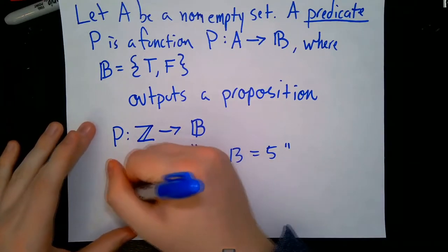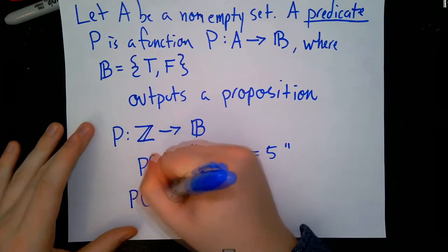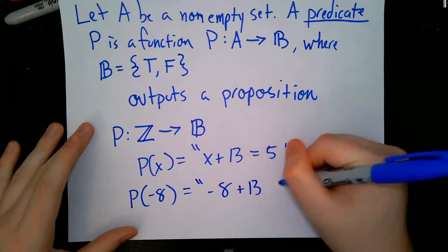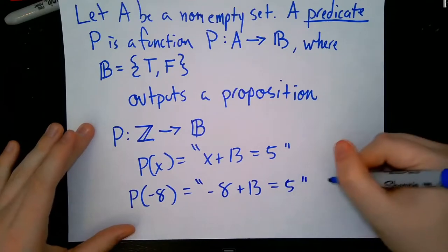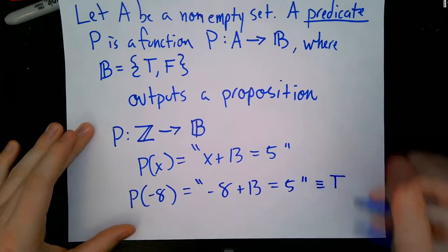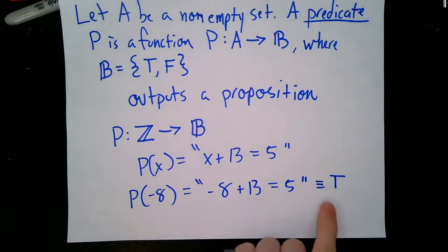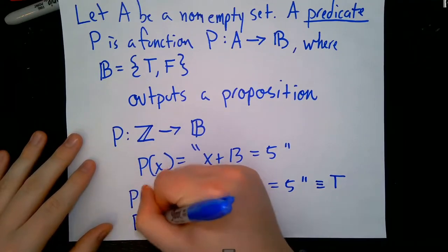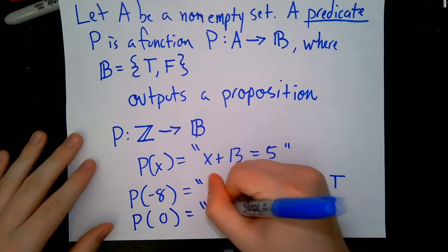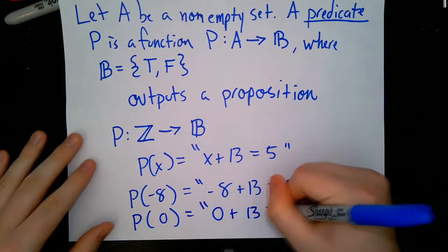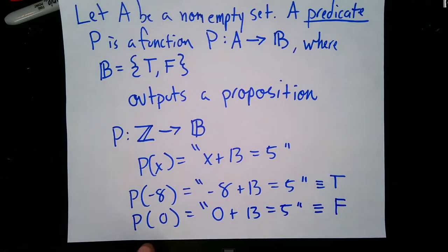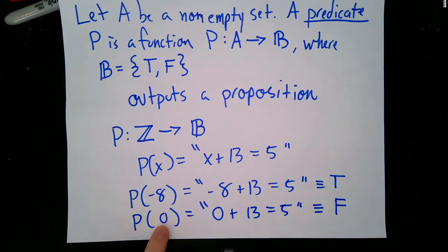For example, p(-8) is going to equal the statement negative 8 plus 13 equals 5, which is equivalent to true — so the input is negative 8 and the output is true. Similarly, p(0) is the statement 0 plus 13 equals 5, which is equivalent to false. So if we take input 0, the image of that input under our predicate is false.